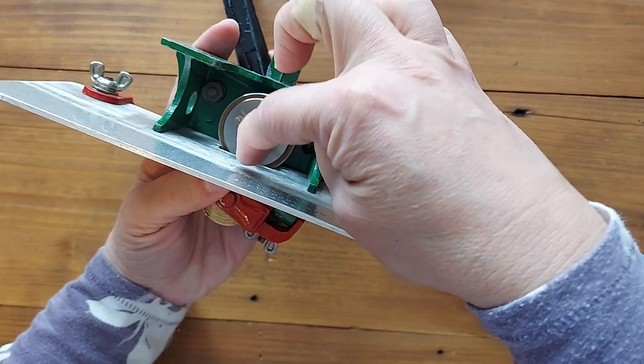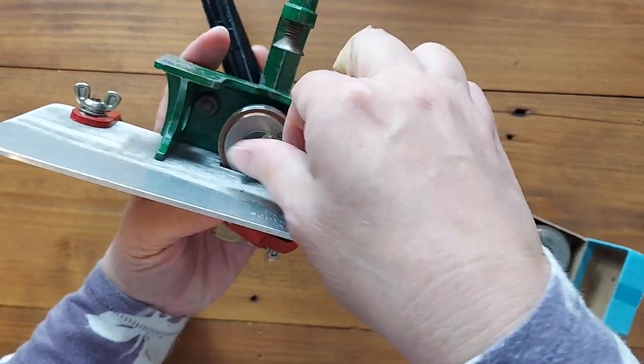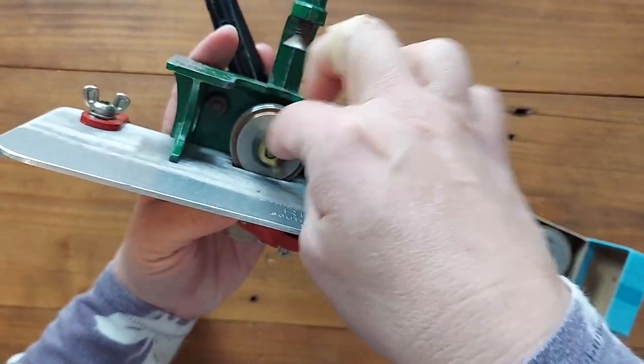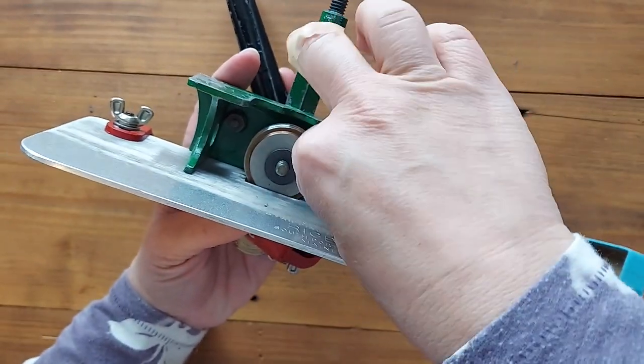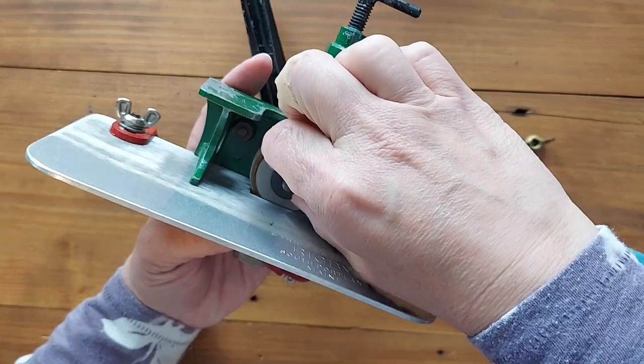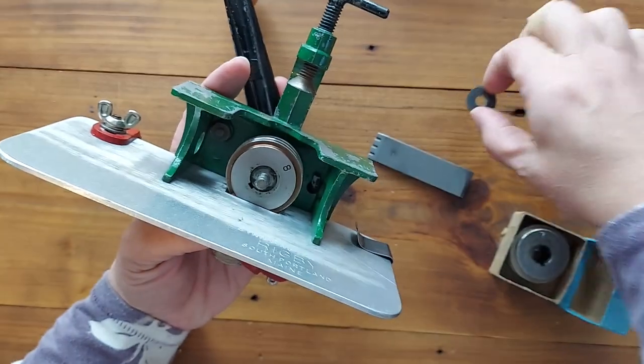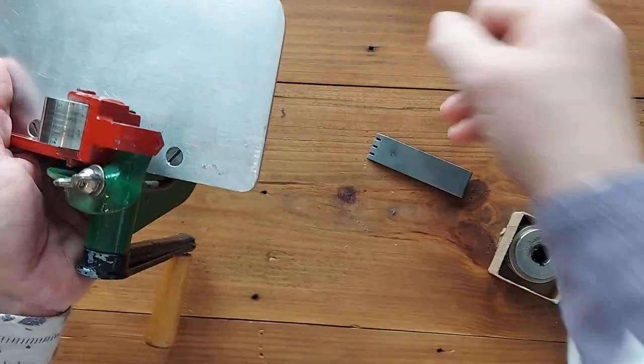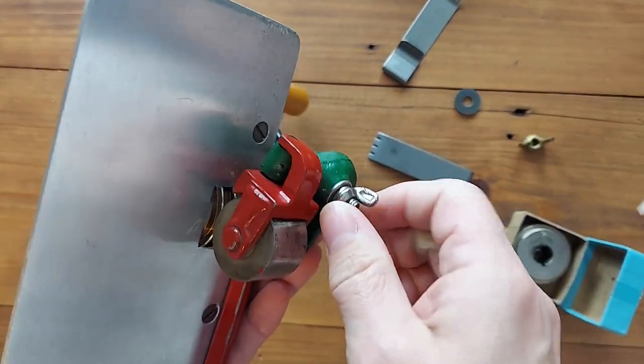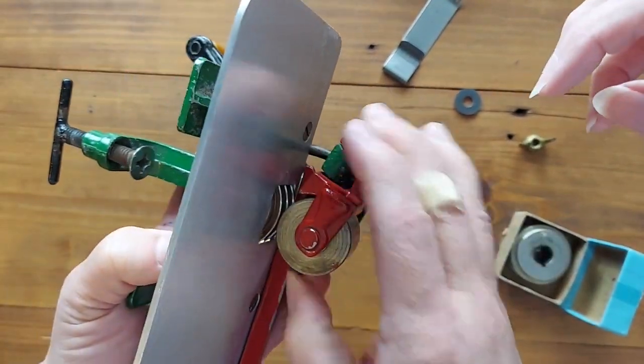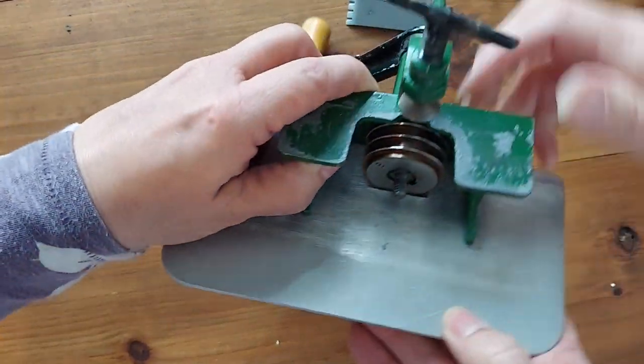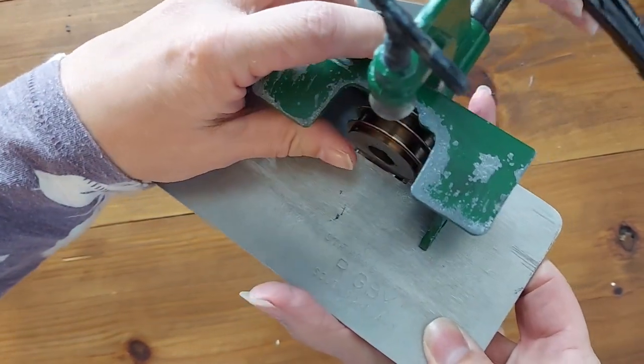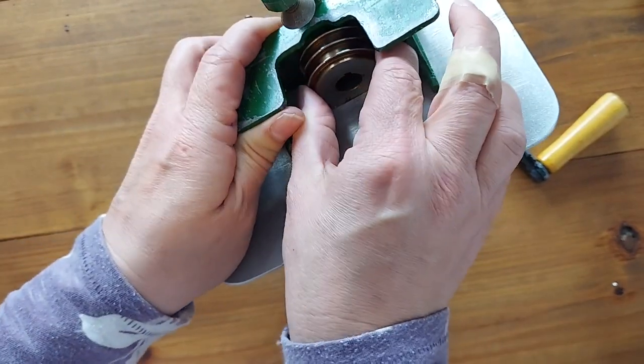To change the blade we're going to unscrew this wing nut, and then remove the washer. Slide this piece off. Then we're going to unscrew this a little bit, and then pull out the handle. And then the blade will slip right out.